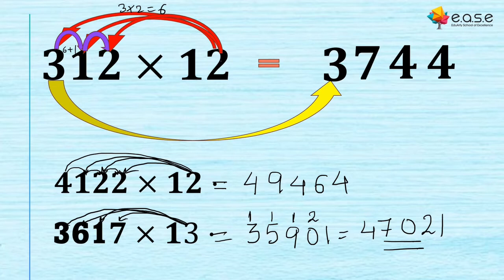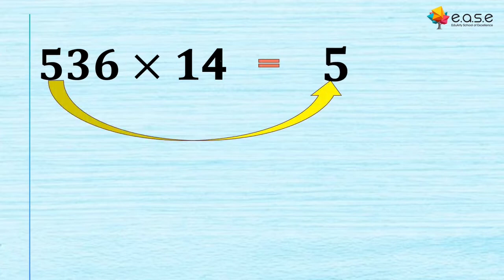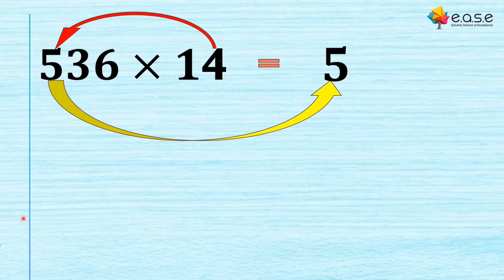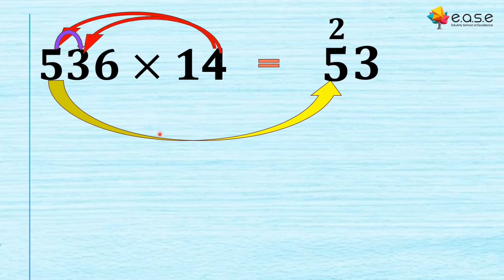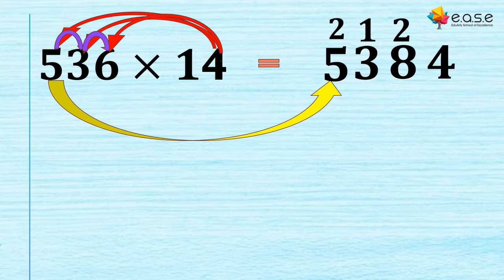Let's take 536 multiplied by 14. We write the 5 as it is. Then 4 × 5 = 20, and 20 + 3 = 23 — the 2 is a carryover and 3 comes down. Then 4 × 3 = 12, and 12 + 6 = 18. Then 4 × 6 = 24. Adding everything up gives us 7504.